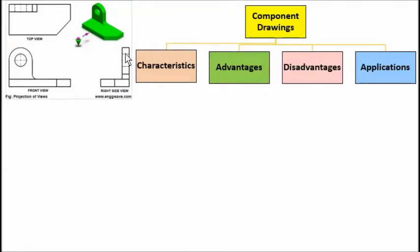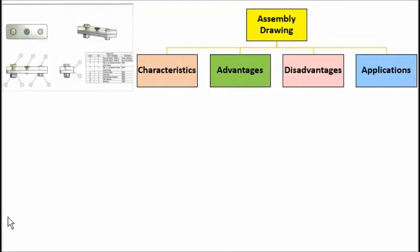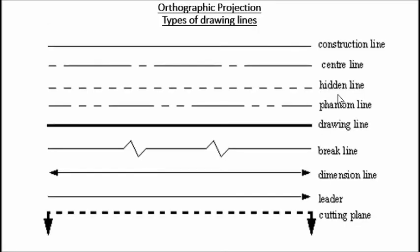For everything you need to understand — for every drawing — you need to consider the characteristics, advantages, disadvantages, and applications. You could get questions on any of these areas in the Unit 9 exam. Types of drawing lines are the various types of lines you will use when drawing a component drawing, an assembly drawing, or any type of orthographic projection, and you can get questions on these as well.